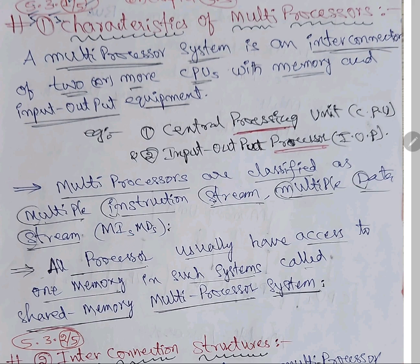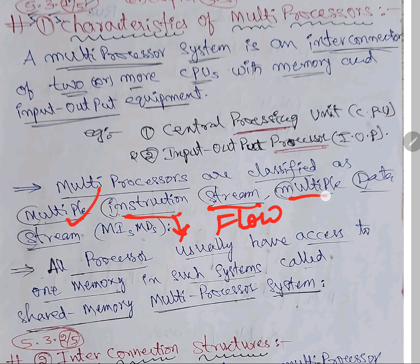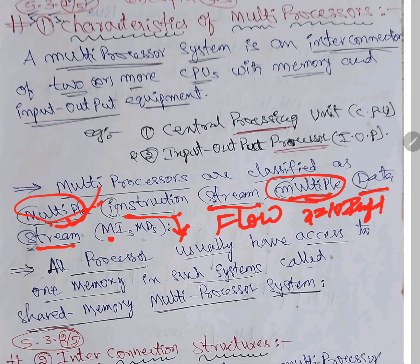Array processor — these are four types. MIMD: multiple instruction means we give multiple instructions. Stream means flow of the instruction. Instructions means command, rules. Many instructions flow. And multiple data — data means information, for example x=10, y=10, anything in the registers in the form of zeros and ones. So multiple instructions and multiple data are used in multiple processors.